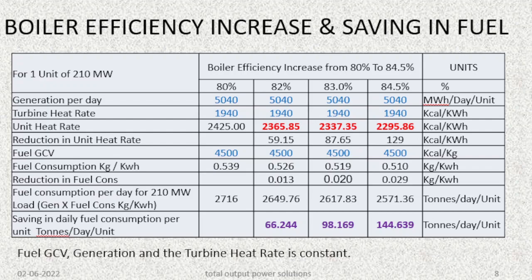When boiler efficiency increases, there will be a decrease in fuel consumption. The table depicts the boiler efficiency increasing from 80% to 84.5% in stages. The generation per day is 5040 MWh per day per unit. The turbine heat rate is 1940, taken as constant for all efficiency levels. The unit heat rate has decreased from 2425 to 2295.86 kcal/kWh when boiler efficiency increases to 84.5%, a reduction of around 129 kcal/kWh.